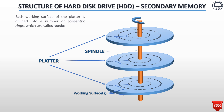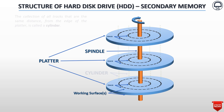Each working surface of the platter is divided into a number of concentric rings, which are called tracks. The collection of all tracks that are the same distance from the edge of the platter is called a cylinder.